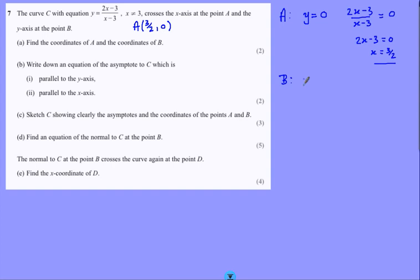Point B, what I know about point B is that the x-coordinate is 0 because it crosses the y-axis. And if that's true, y equals, put 0 in here, minus 3 over minus 3, 1. And so we've got point B, 0, 1.